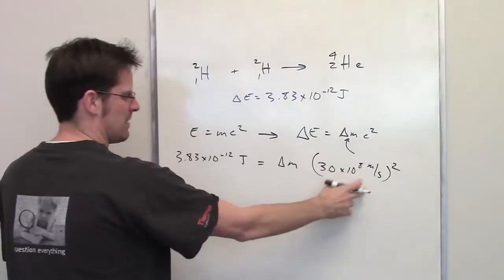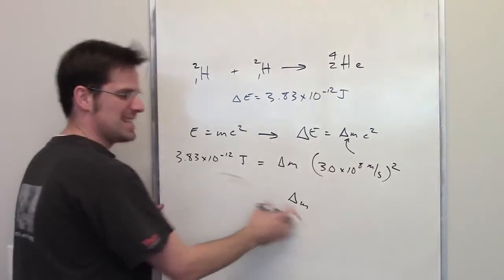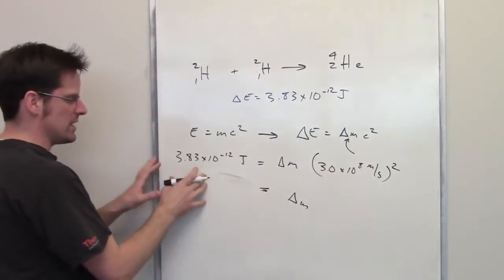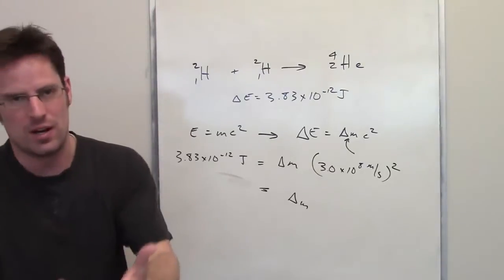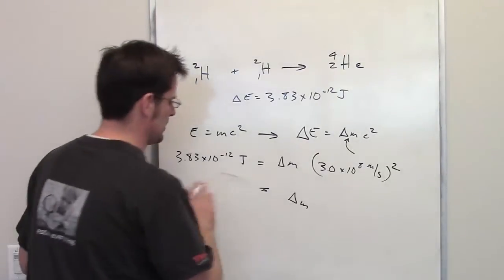So if I take this number and divide it by that number, I end up getting delta M being equal to some crazy number. I'm going to let you do that on your calculator. It's not really too bad.